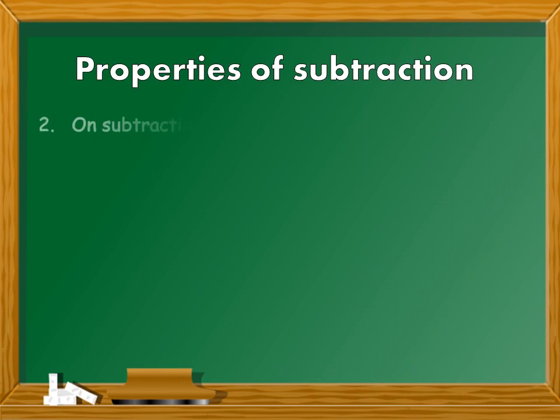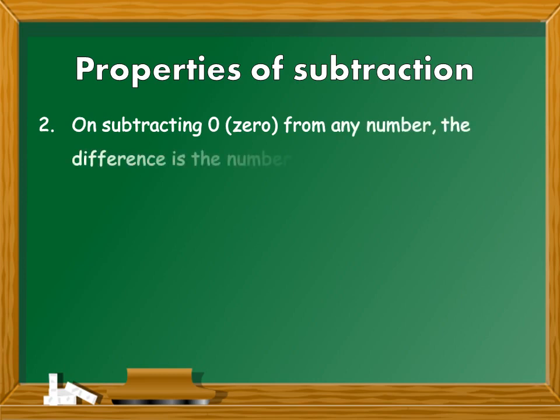Property number 2: On subtracting 0 from any number, the difference is always the number itself. For example, 59 minus 0 is equal to 59, or 275 minus 0 is equal to 275.